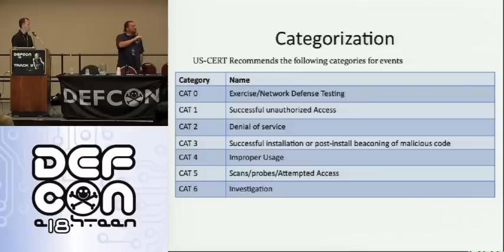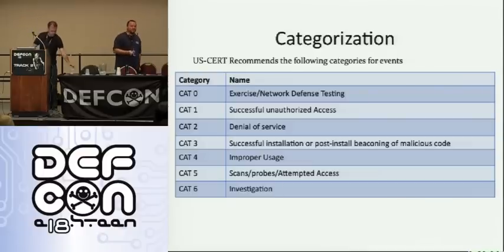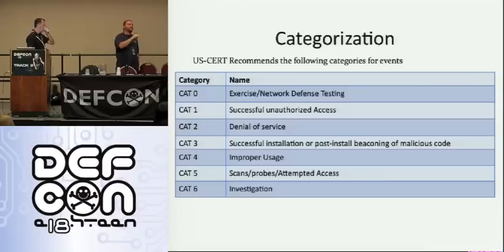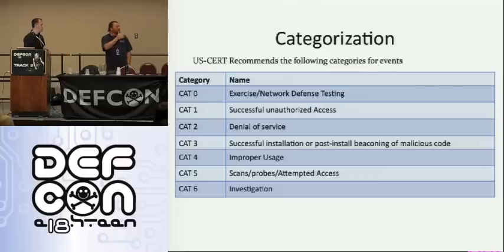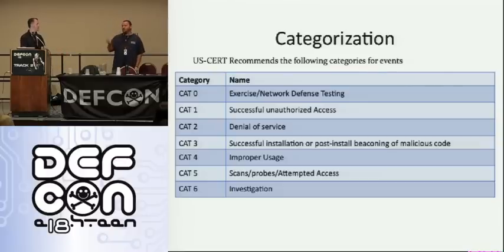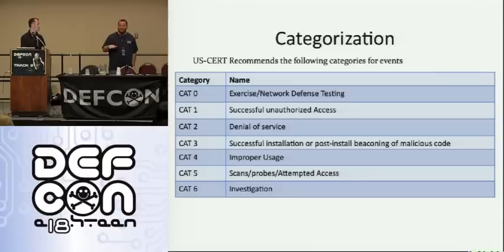Denial of service — typically what US-CERT cares about is only if it's a successful denial of service, only if it actually happened. Installation of malware or post-infection beaconing, intrusion, inclusion into a botnet — that's Category 3. They only care if it actually worked. If your antivirus caught it, they don't want to know within the purview of what they're reporting.